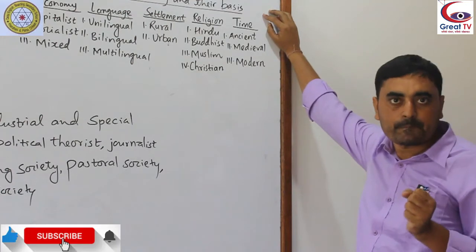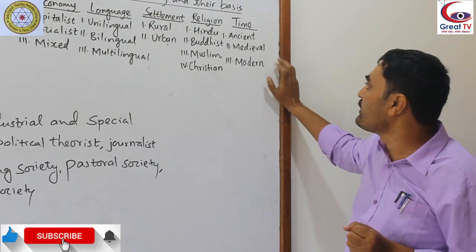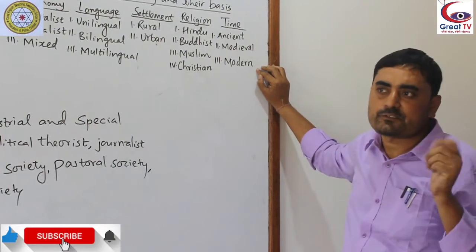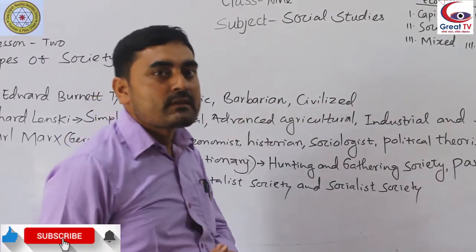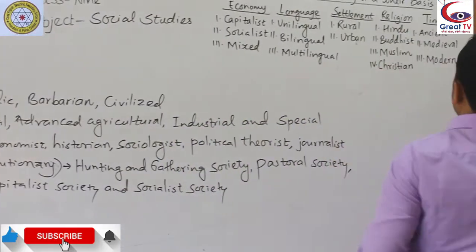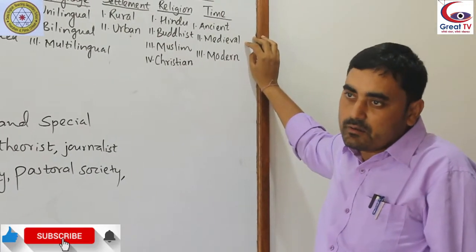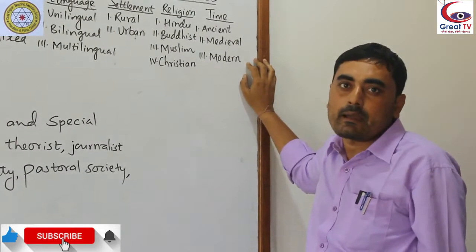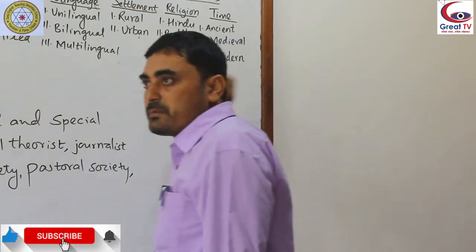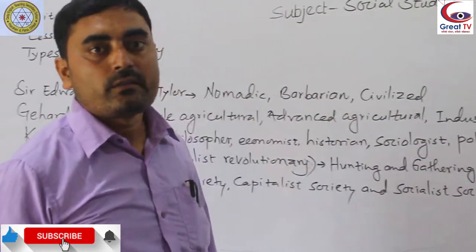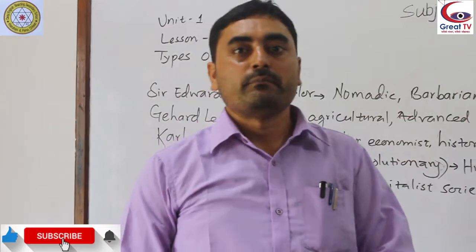On the basis of time period, society can be divided into ancient society, medieval society, and modern society. In the context of Nepal, ancient society is basically associated with the Kirat society. That society is called ancient society. Medieval society is where more rules started being built in the country. Modern society, in the context of Nepal, began after the period of Kirat and then with the Shah and Chaha dynasties. That period marks the beginning of the modern period in Nepal. In this way, human society can be classified in various ways, and there are various types of society.